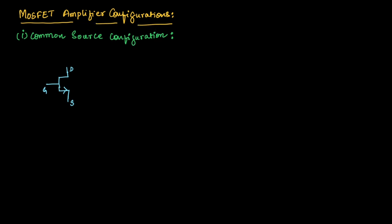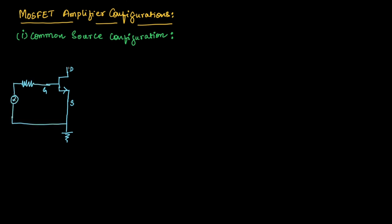From our previous discussion, we understood that in common source configuration, the source will be common between input and output; the gate terminal acts as the input side and the drain terminal acts as the output side. So let us make the connection: the source terminal is connected to ground, at the gate terminal we connect the input through a resistor, and at the drain terminal we connect resistor RD.